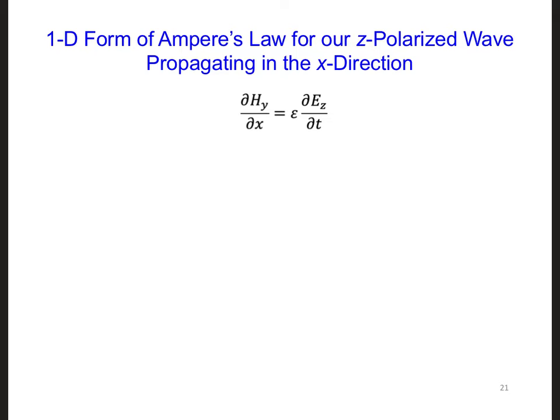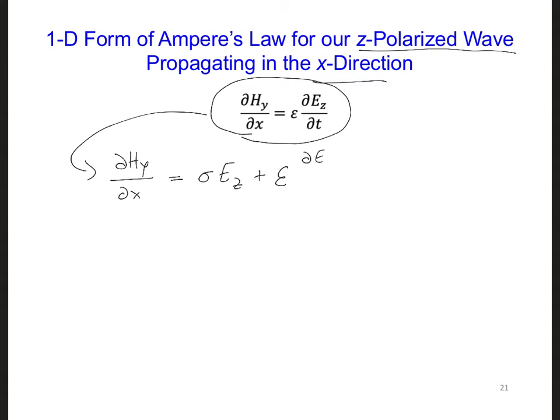As a result, the free space one-dimensional form of Ampere's law that we used earlier for the z-polarized wave propagating in the x direction would change from this to, now we're going to have on the left for the curl of H, we're just going to have dHy dx, and now on the right we're going to have sigma times Ez, since we only have the z component of the electric field, and then epsilon dEz dt.